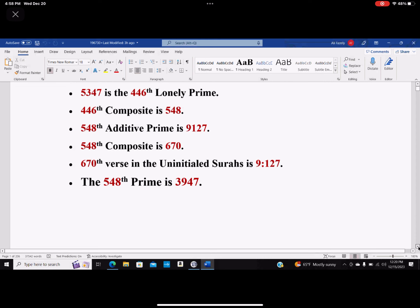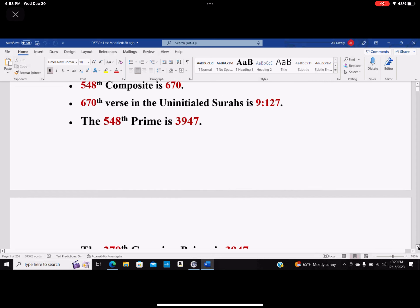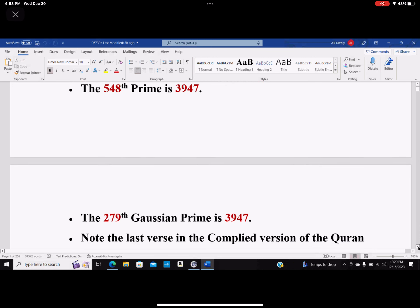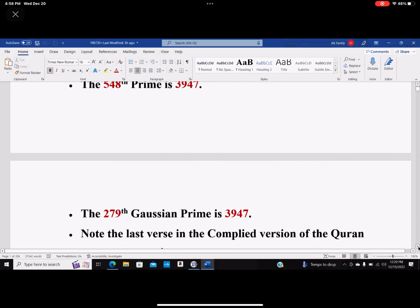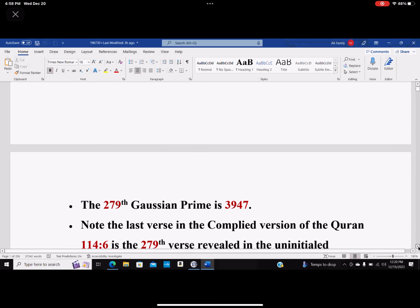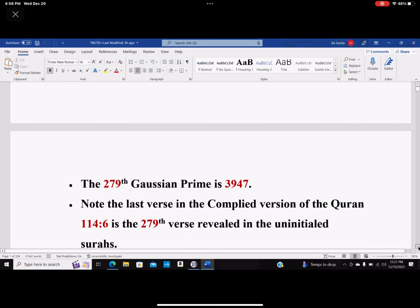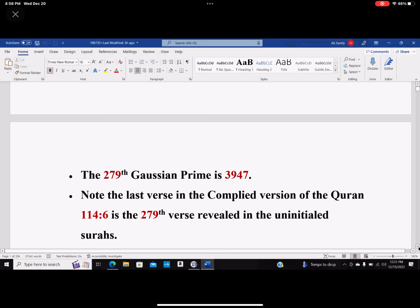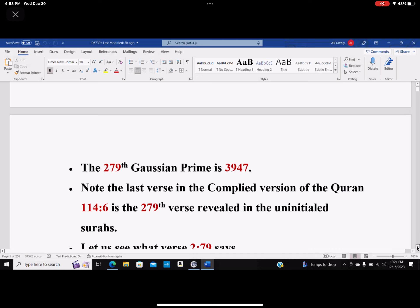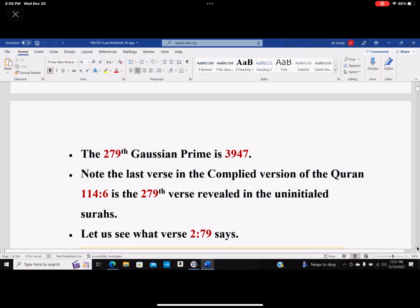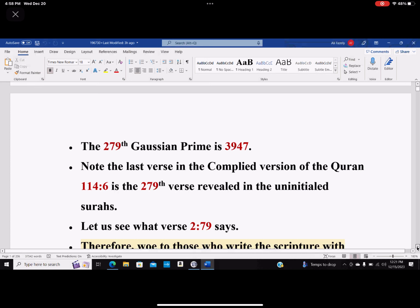The 279th Gaussian prime happens to be 3947. Note the last verse in the compiled version of the Quran—that's the Quran that we have, that the first chapter is Al-Fatiha and the last chapter is Al-Nas. So in the compiled version, the last verse is 114:6, is the 279th verse revealed in the uninitiated surahs. So you can verify that from our translation. I have those tabulated in there, so you can take a look at it. So let us see what 2:79 actually says. Now we've been talking about the two false verses.